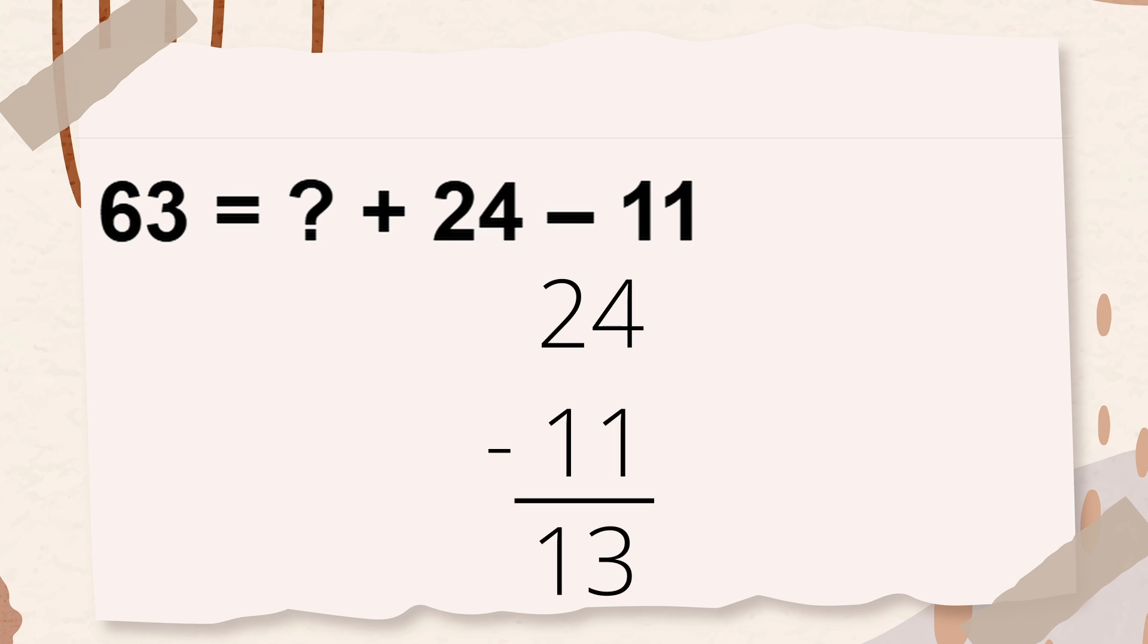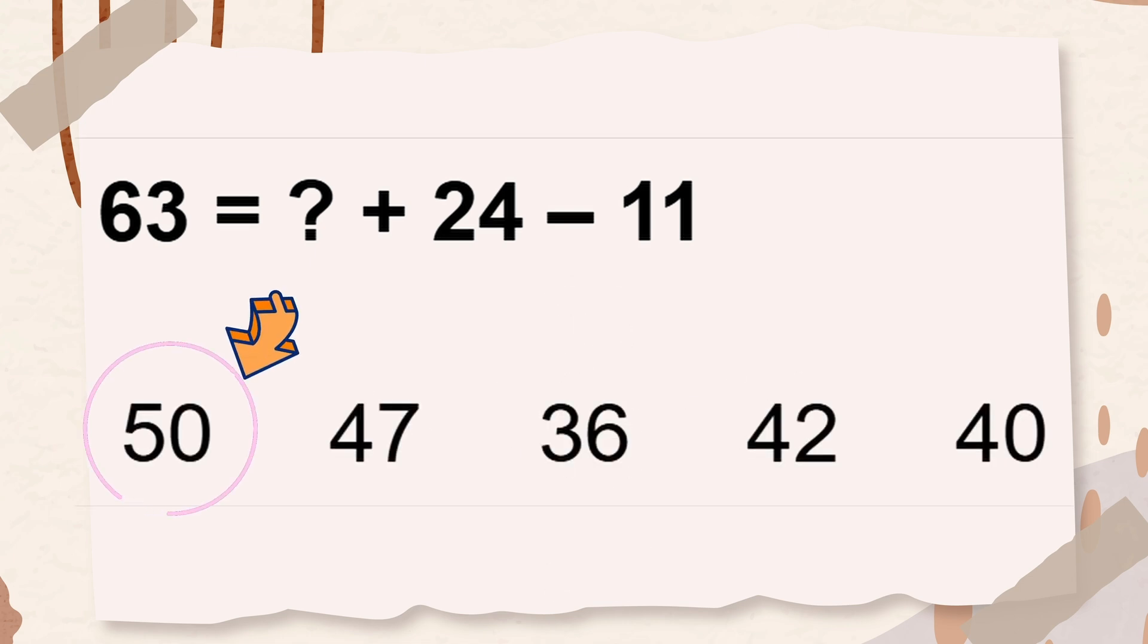This is what we know. First, we simplify the right side of the equation by subtracting 11 from 24. This is because we need to combine the numbers on the same side of the equation to make it easier to compare both sides. Now, the equation becomes, to find the missing number, we use subtraction. Let's subtract 13 from 63. So, the correct answer is 50.